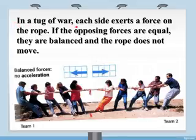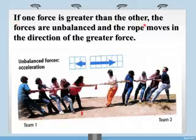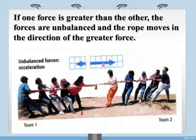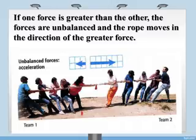One more example: in a tug of war, each side exerts a force on the rope. If the opposing forces are equal, they are balanced and the rope does not move. Now if one force is greater than the other, the forces are unbalanced and the rope moves in the direction of the greater force. So in tug of war we have both conditions: balanced forces when equal forces are applied, and unbalanced forces when unequal forces are applied.